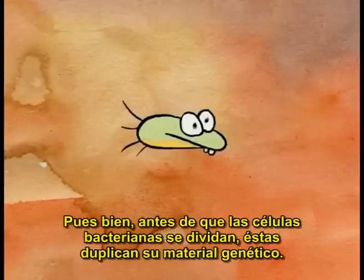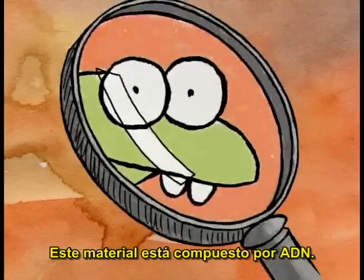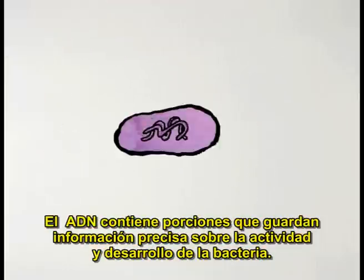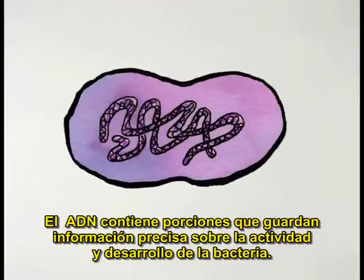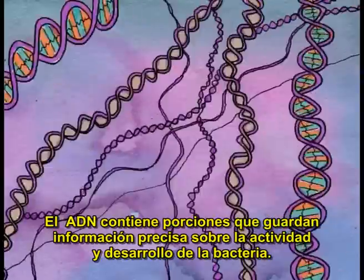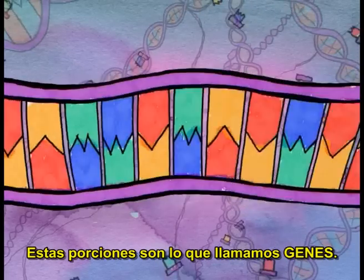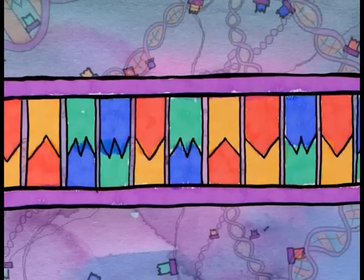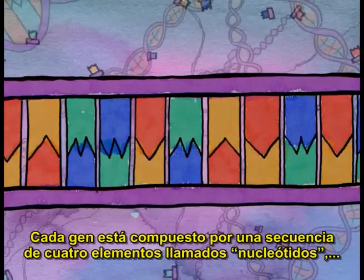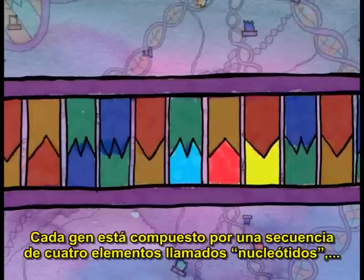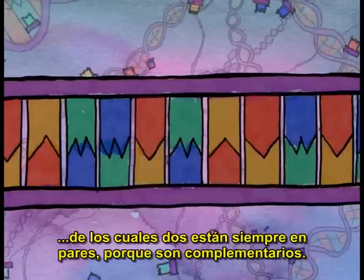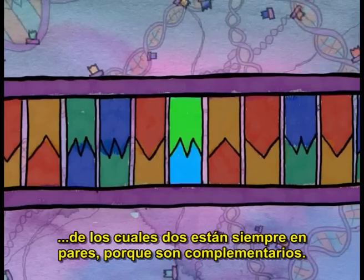Well, before bacterial cells divide, they duplicate their genetic material. This material is composed of DNA. Portions of the long molecule can hold precise information on the activity and development of the bacteria. These portions are what we call genes. Each gene is composed of a sequence of four elements, called nucleotides, of which two are always matched in pairs because they're complementary.